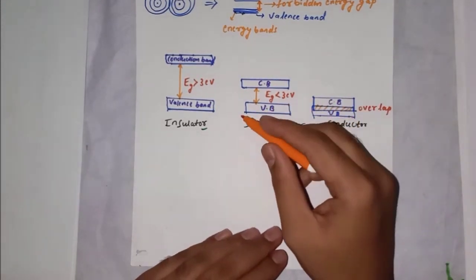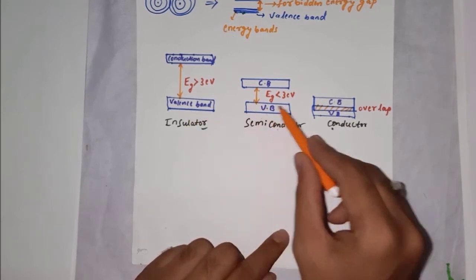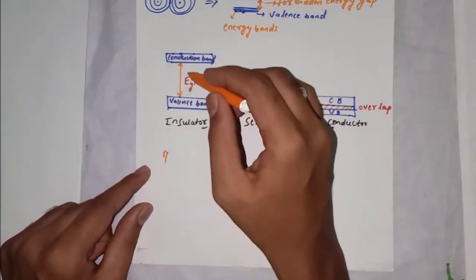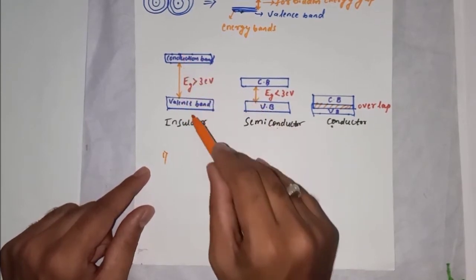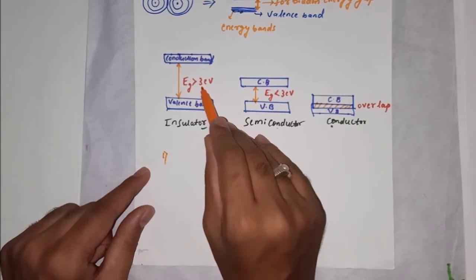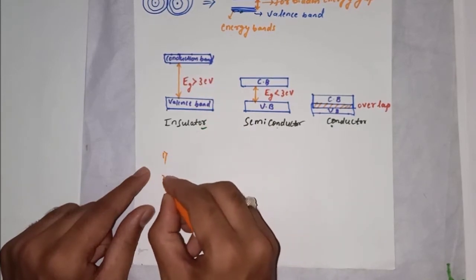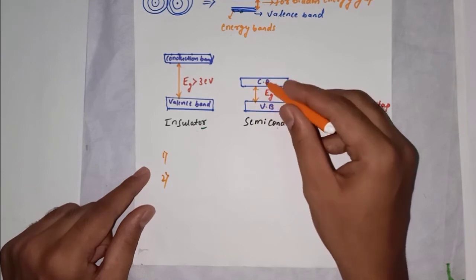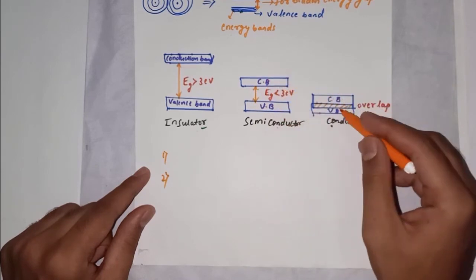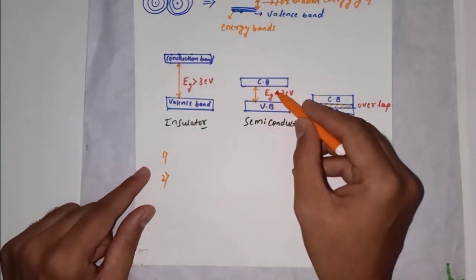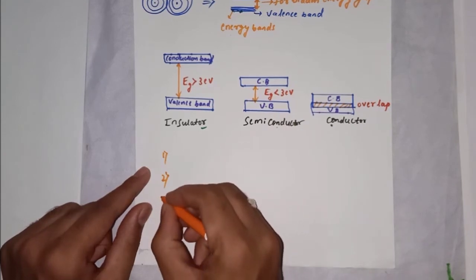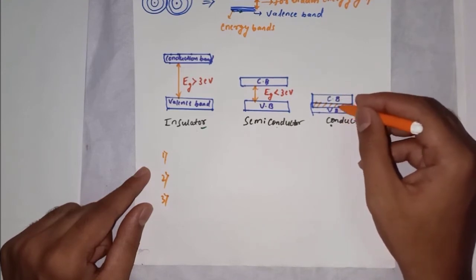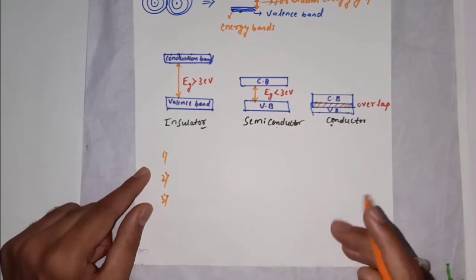For a three-mark question on this topic, draw the diagram first and write three points: first, for an insulator the gap between valence band and conduction band is large, greater than 3 eV; second, for a semiconductor the energy gap is neither overlapping nor very large, and it is less than 3 eV; third, for a conductor the valence band and conduction band overlap each other.